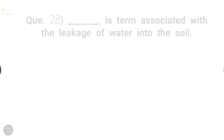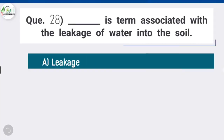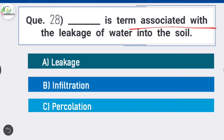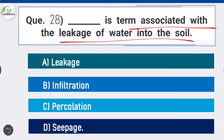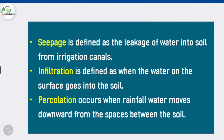Question 28: Dash is the term associated with the leakage of water into soil. Option D is correct: seepage. Seepage is defined as the leakage of water into soil from irrigation canals. Infiltration is defined as when water on the surface goes into the soil. Percolation occurs when rainfall water moves downward through spaces between the soil particles.